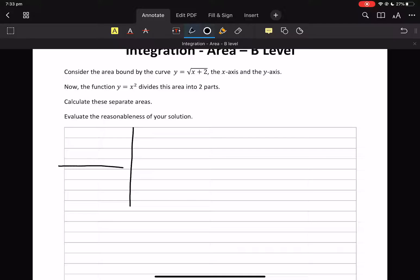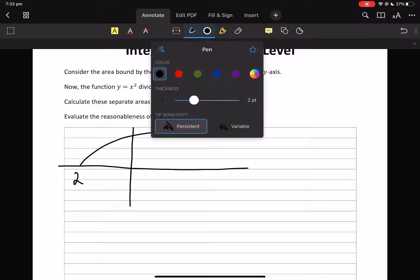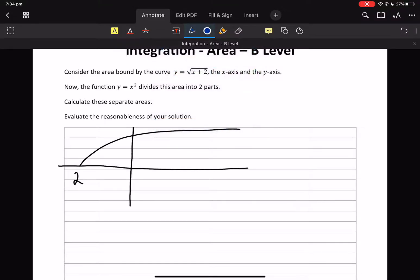So a square root function that's going to start over there, and that's the number two. Now this y = x² cuts this area into two, so y = x² goes like that, and you can see we've got two different areas: one there and one there.